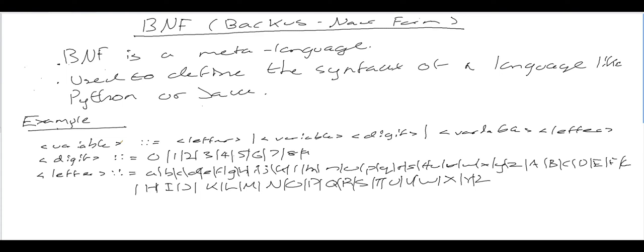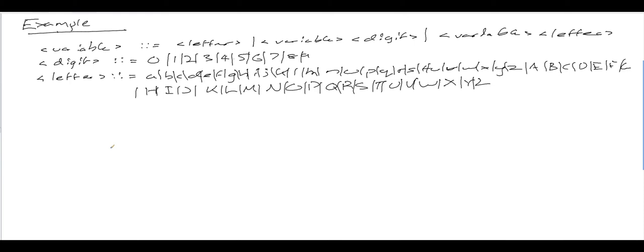So what about the variable production rule? A variable is defined by a letter, so a variable could be a single letter on its own. Remember, the goal was to define a variable that consists of a letter followed by any number of other letters or numbers. So a variable could consist of a letter on its own, or a variable and a digit, or a variable and a letter. This is where the recursion comes in — the variable is defined in terms of itself.